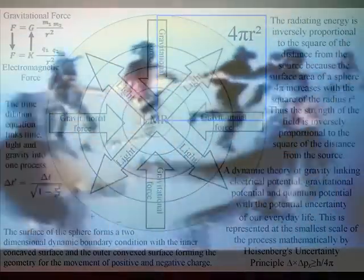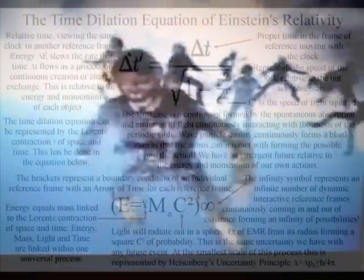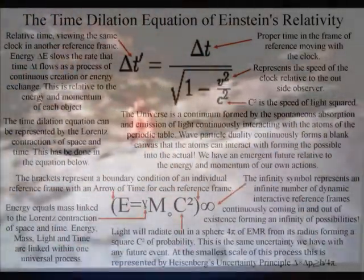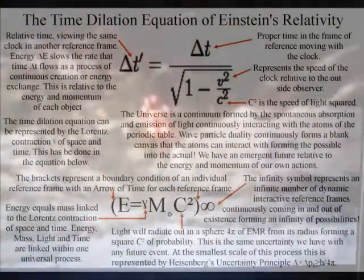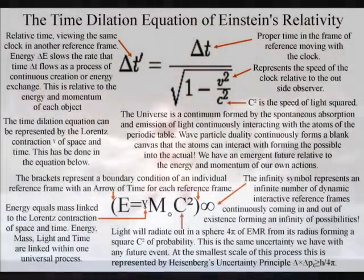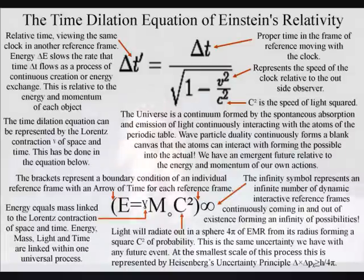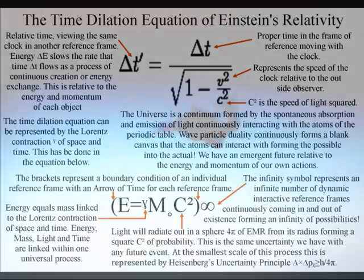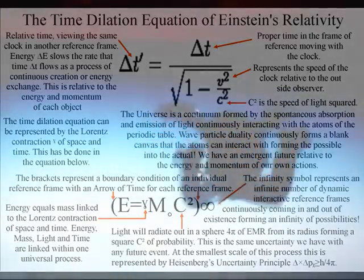Photon energy slows the rate that time flows as a process of continuous creation relative to the energy and momentum of each object or life form. Mass will increase relative to this, with the time dilation of Einstein's relativity being part of this universal process. At the most fundamental level, this is a universal process of spherical symmetry forming and breaking relative to the atoms of the periodic table.